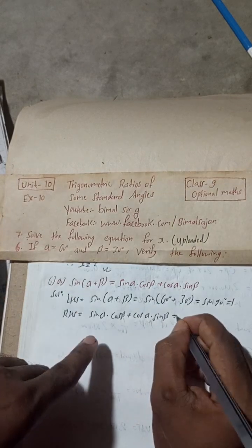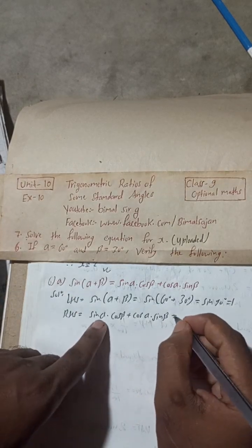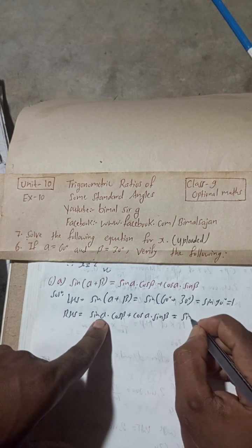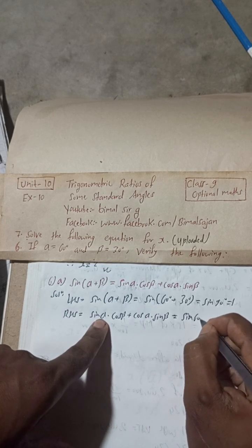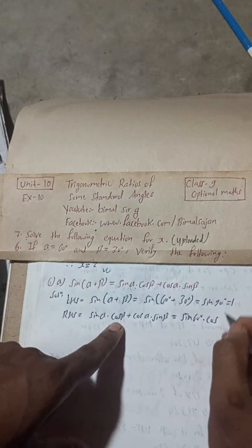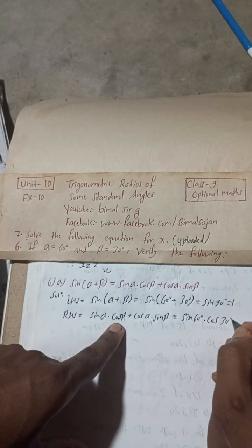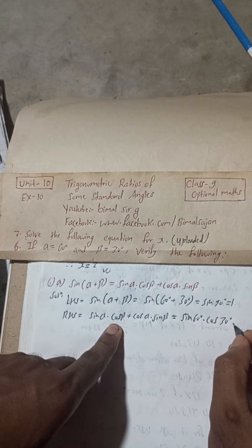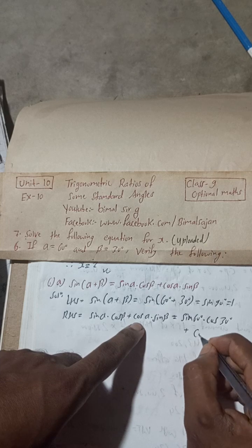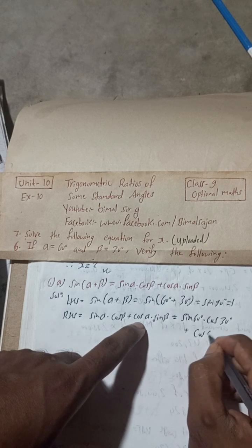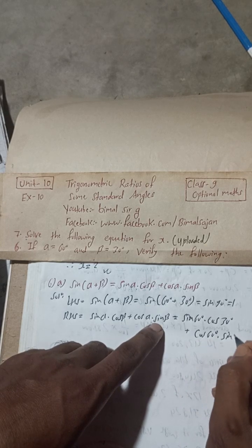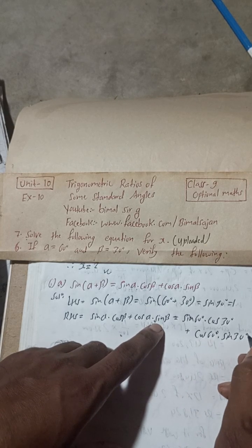So sin alpha means sin 60 degrees, cos beta means cos 30 degrees, plus cos alpha means cos 60 degrees, sin beta means sin 30 degrees.